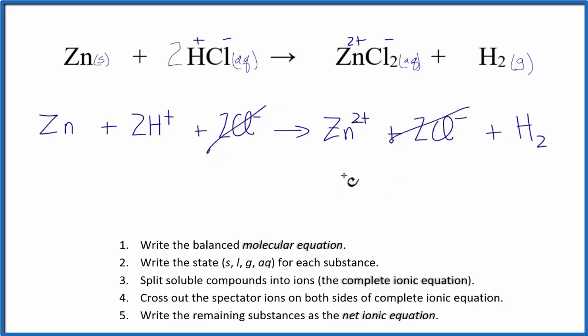Everything else is different. So we've crossed the spectator ions out, and now we can write our net ionic equation.